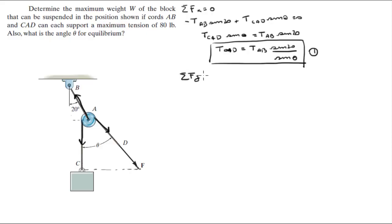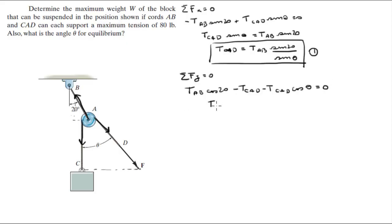The sum of the forces in the y-direction are also equal to 0. So tension AB times cosine of 20 — the y-component of tension AB — minus tension CAD times cosine of theta equals 0, since the weight goes straight down. Factoring out tension CAD, we get tension AB cosine of 20 equals tension CAD times (1 plus cosine of theta).